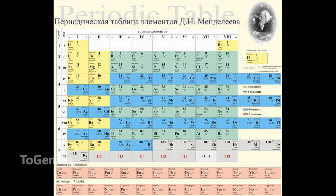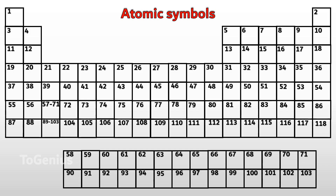Therefore, the chemical properties of elements are more related to their atomic numbers than their atomic mass. Next, atomic symbols. Every element has a unique atomic symbol, which is a one- or two-letter abbreviation derived from its English or Latin name. These symbols are used universally in chemical equations and formulas to represent elements.